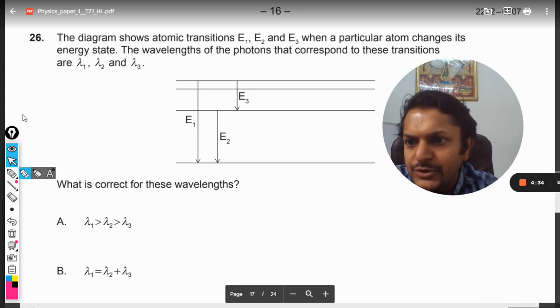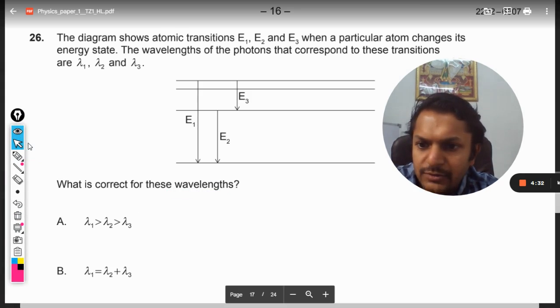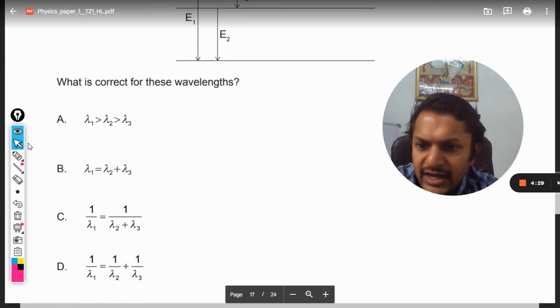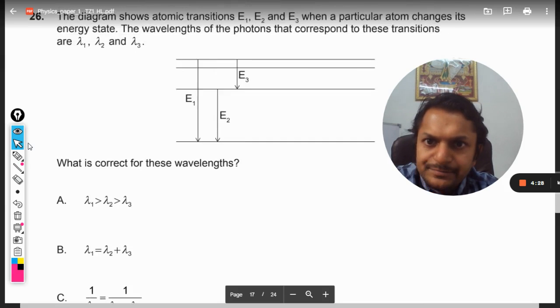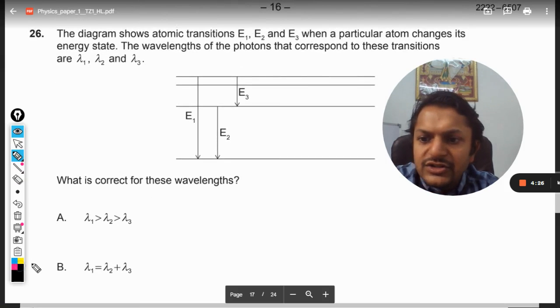First of all, let us see what are the options given: option A, option B, C, and D.